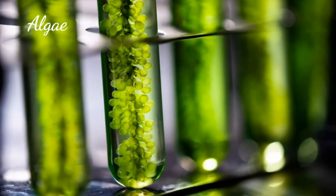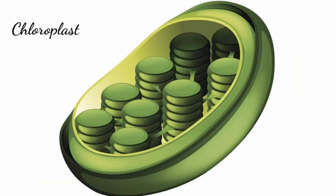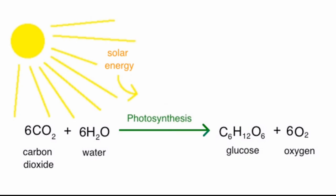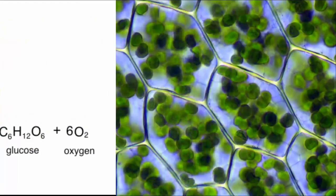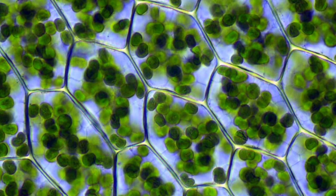If this eukaryotic cell were a plant cell — like an algae cell, for example — it would have an exclusive set of organelles called chloroplasts. These organelles are responsible for photosynthesis in plants by capturing light energy and using it to convert carbon dioxide and water into oxygen and energy-rich organic compounds such as glucose. Animal cells, such as human cells, don't have chloroplasts because we don't need photosynthesis for energy since we have a whole digestive system to extract nutrients from the foods we eat. This means chloroplasts are only found in plant cells, not animal cells.